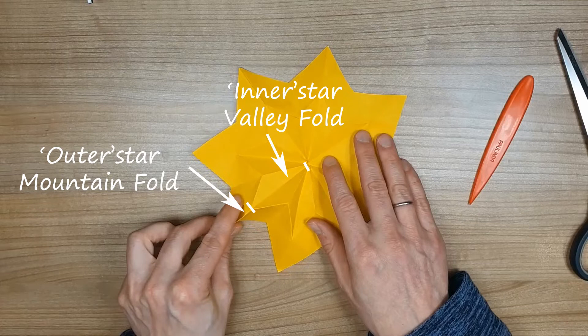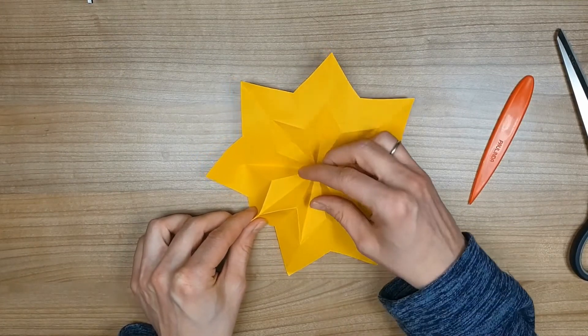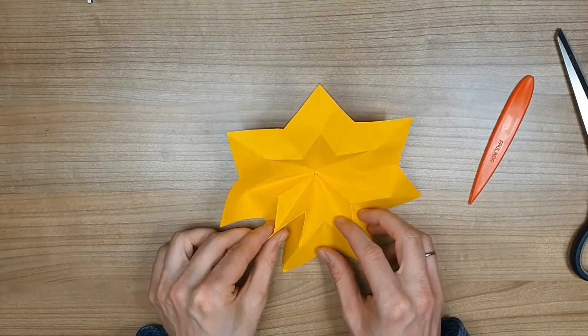The next point of the star should have the same construction and in between must be the opposite. A mountain fold in the inner star and a valley fold in the outer star.